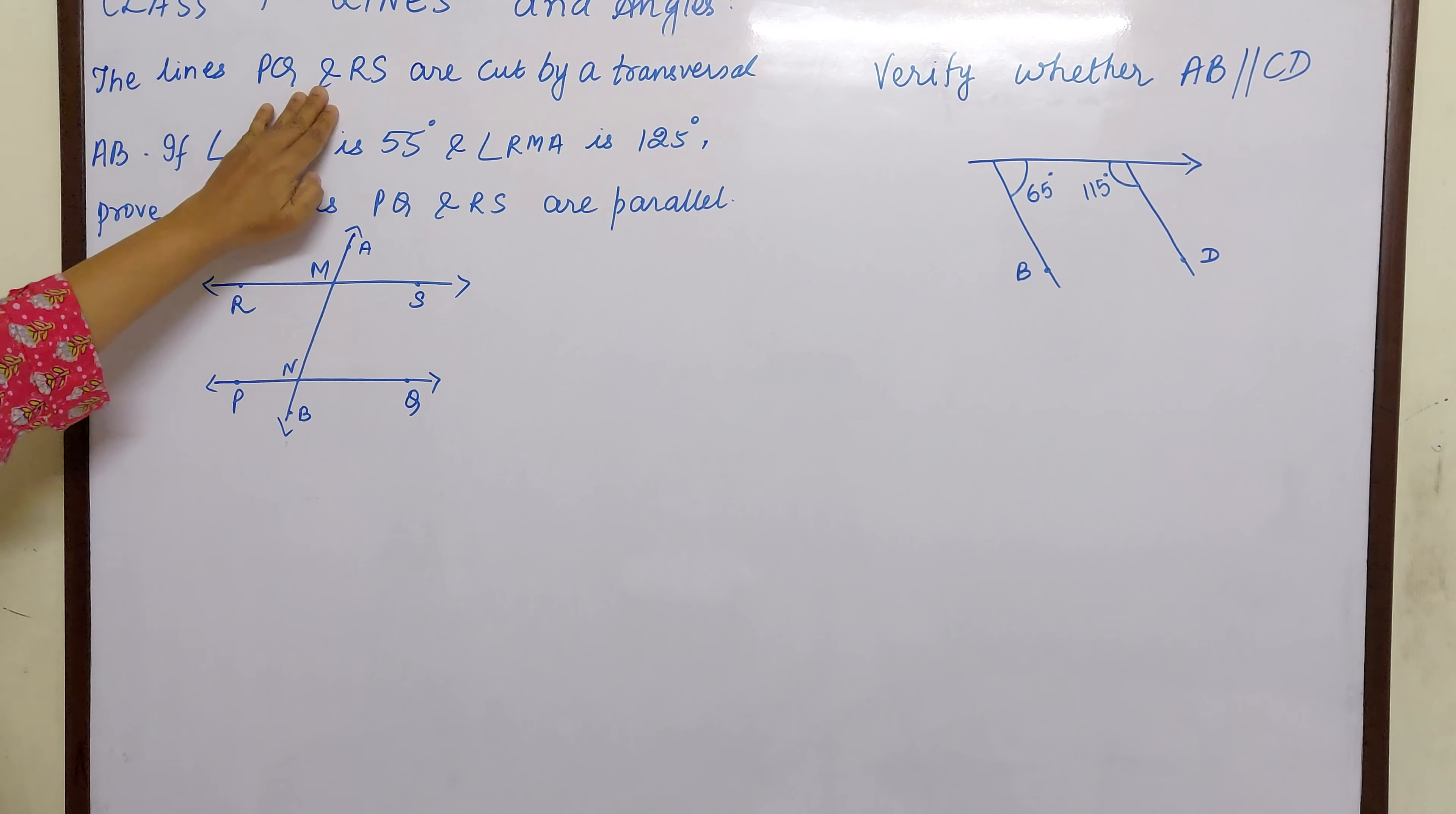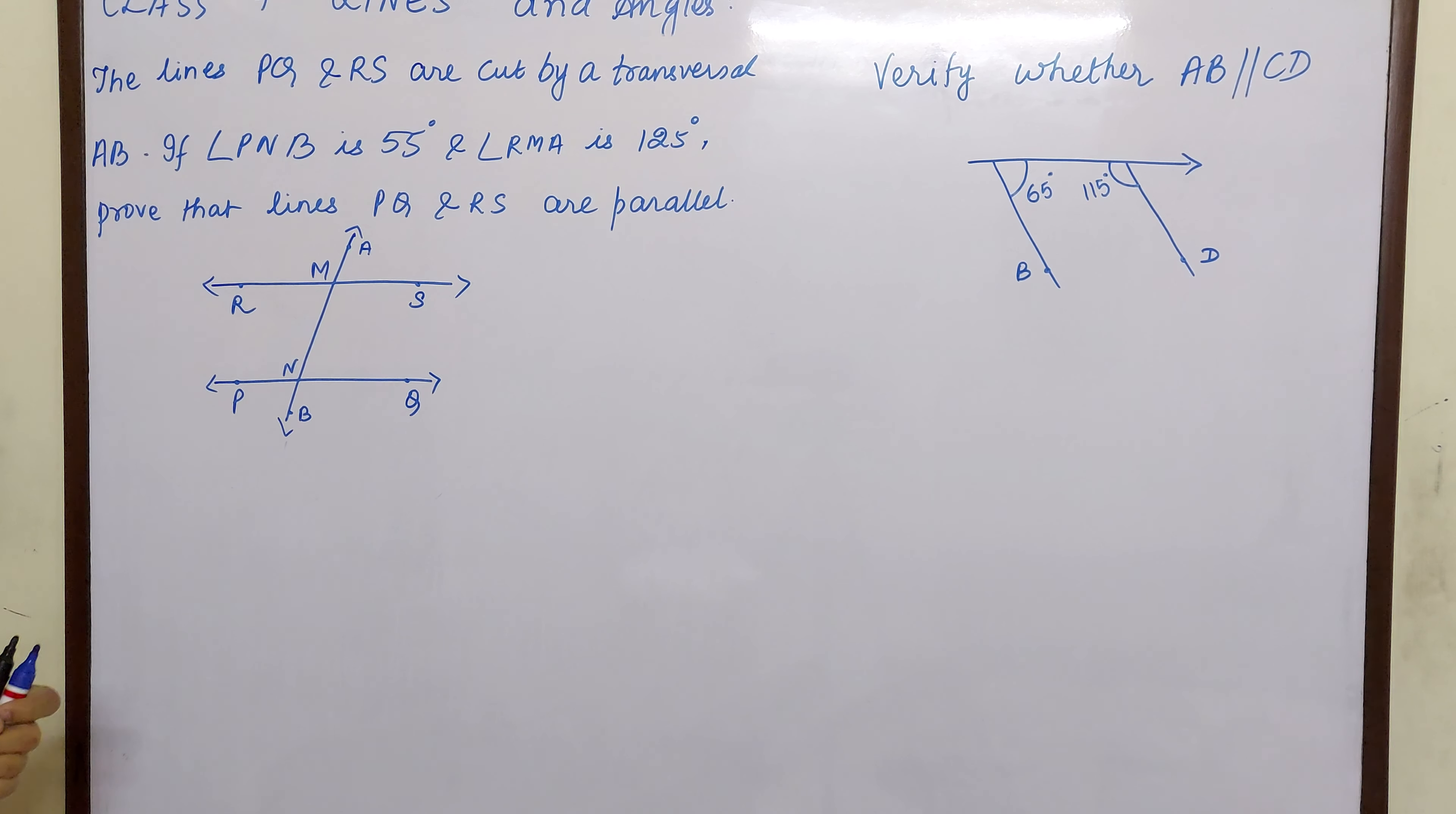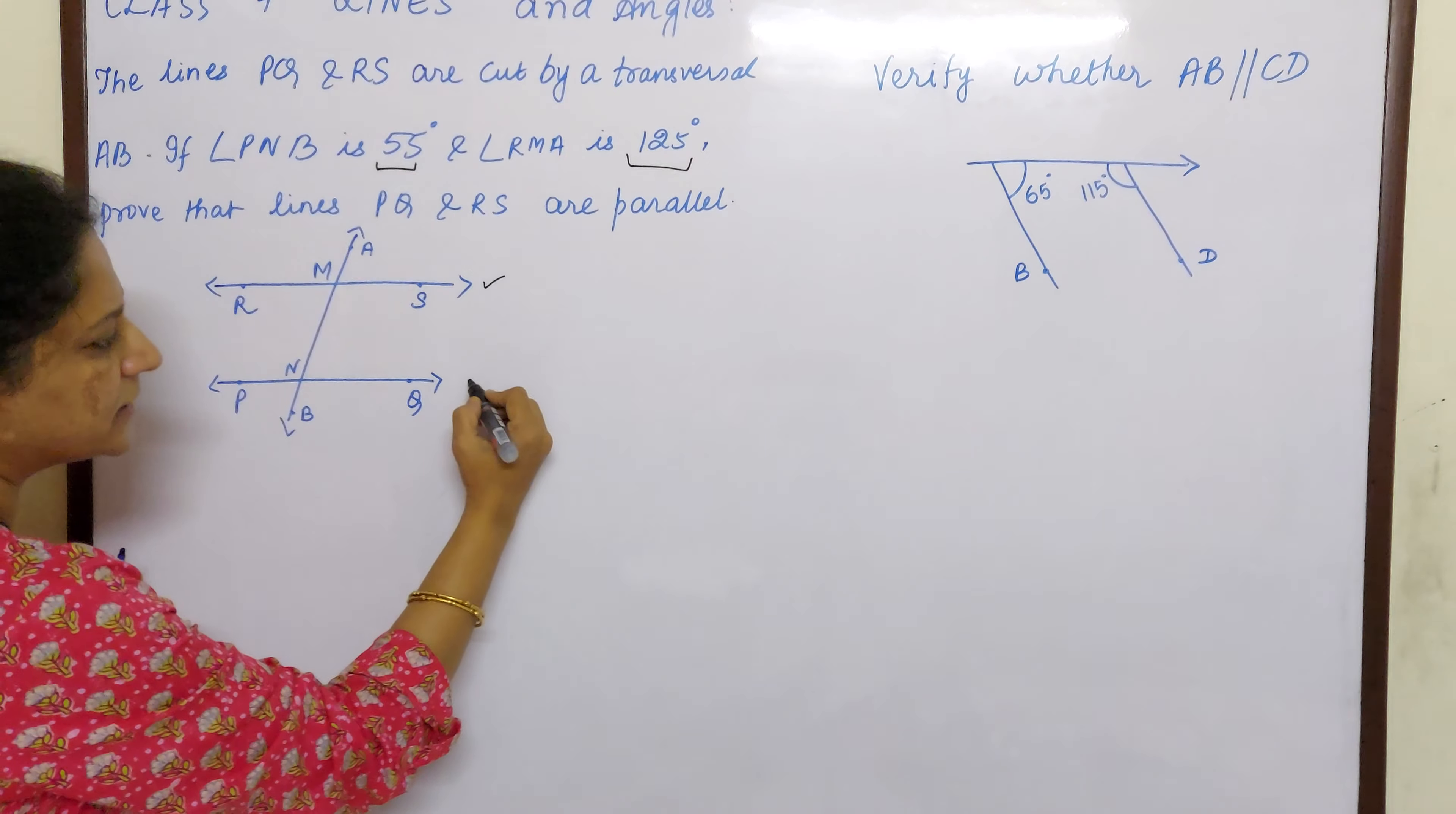The lines PQ and RS are cut by a transversal AB. If angle PNB is 55 degrees and angle RMA is 125 degrees, prove that line PQ and RS are parallel.